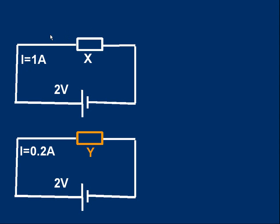Look at the lower circuit. I've changed object X for a different object Y. Still got two volts trying to push a current through, but in this case the current is only 0.2 amps. The current is five times smaller than it was for X.